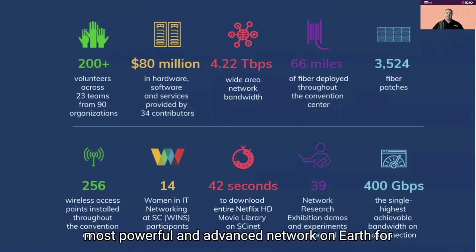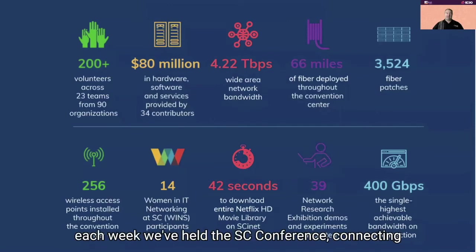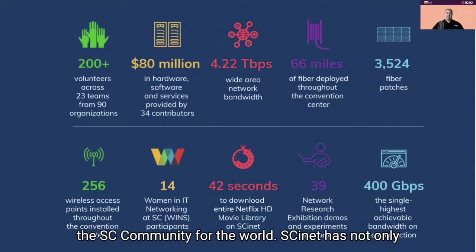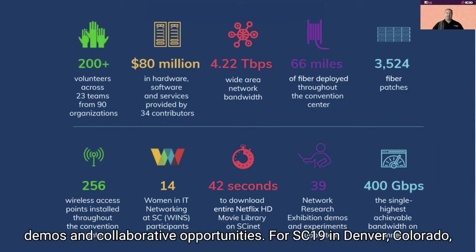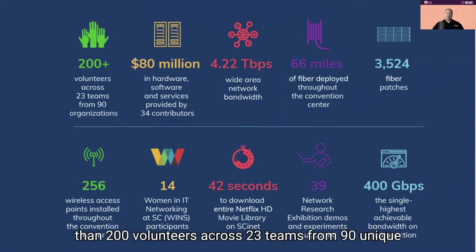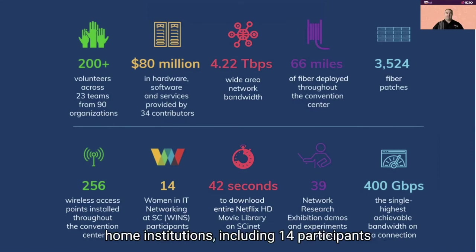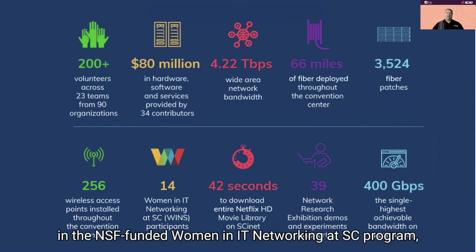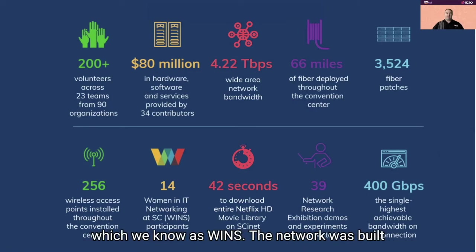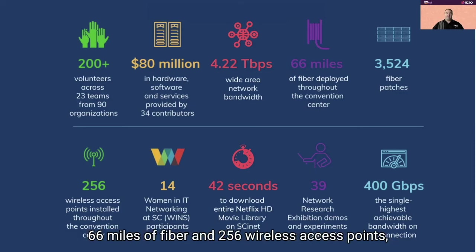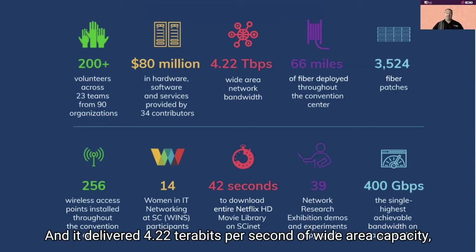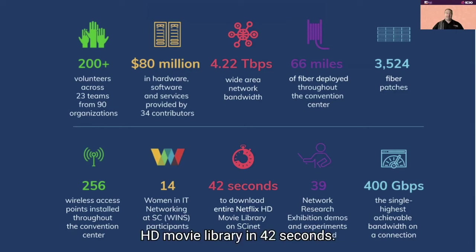During the past 30 years, SCinet has become the most powerful and advanced network on earth for each week of the SC conference, connecting the SC community to the world. For SC19 in Denver, SCinet was built by more than 200 volunteers across 23 teams from 90 unique home institutions, including 14 participants in the NSF-funded Women in IT Networking at SC program. The network was built with more than $80 million in hardware and services, 66 miles of fiber, and 256 wireless access points, delivering 4.22 terabits per second of wide area capacity.